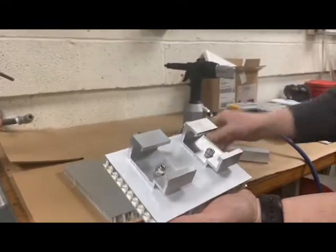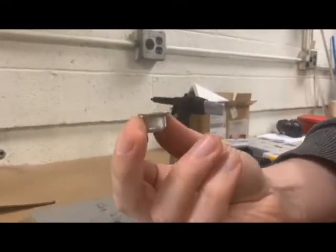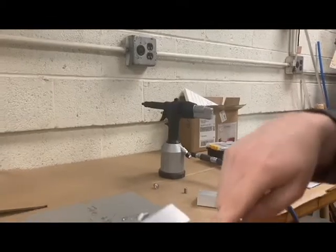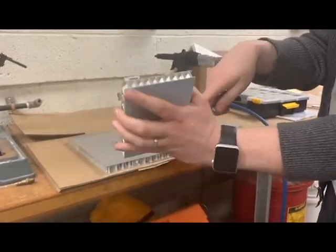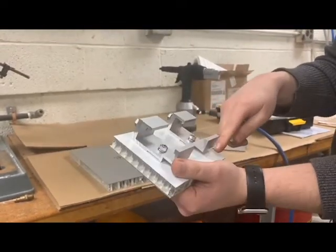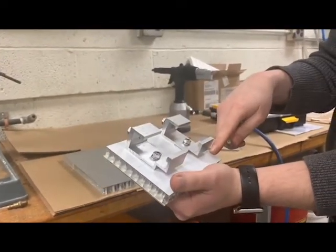So what we have is our anchoring system. This is what the anchor looks like, and this is used to give yourself a female thread in a honeycomb panel. This is an aluminum honeycomb panel, though you could also use them in fiberglass and other materials.